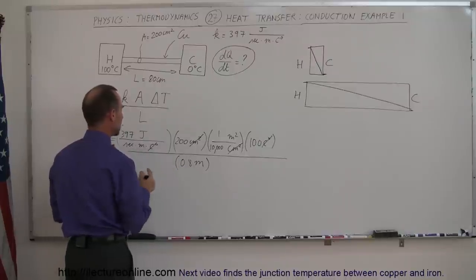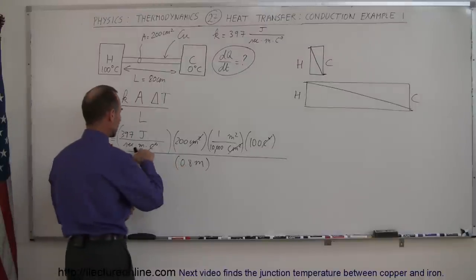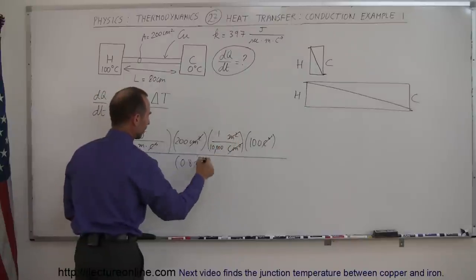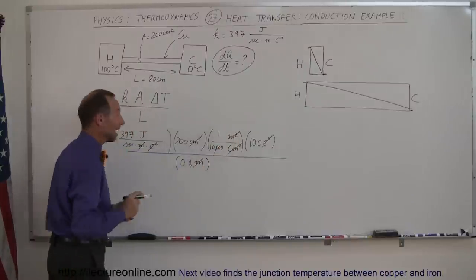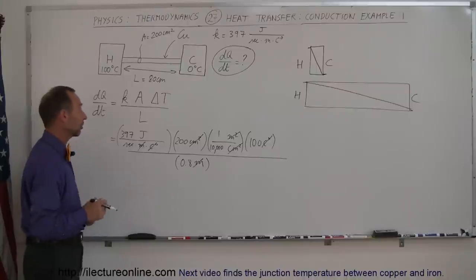That would be meters squared. Let's see here. That would go in here, and that cancels out the meters squared there. So this one cancels out those two meters, and we're left with joules per second. That's energy per unit time. So those are good units.